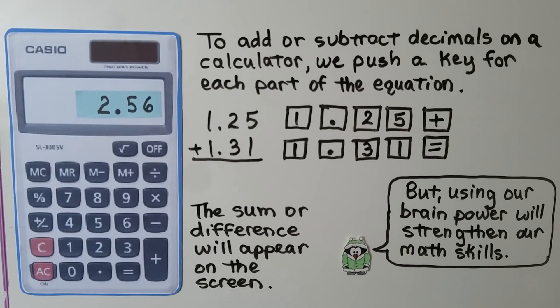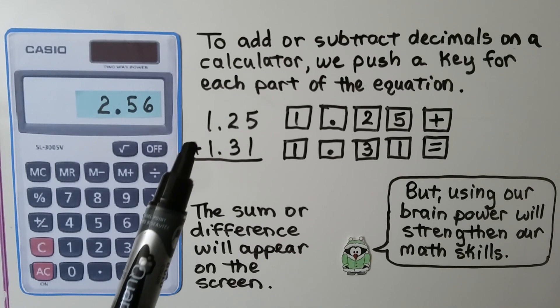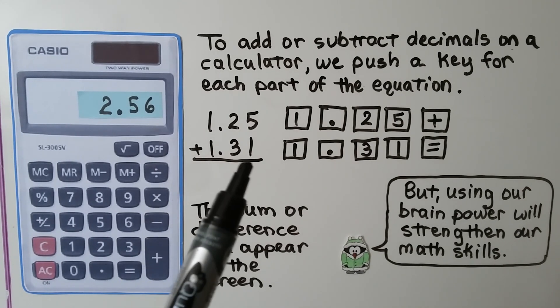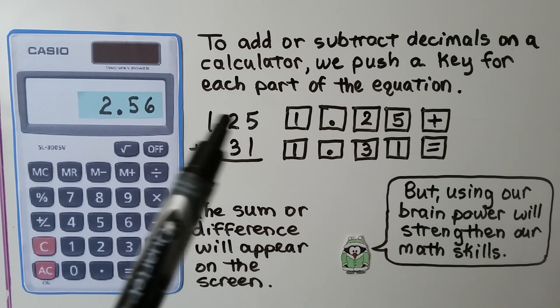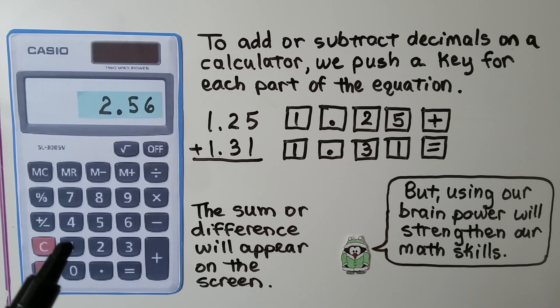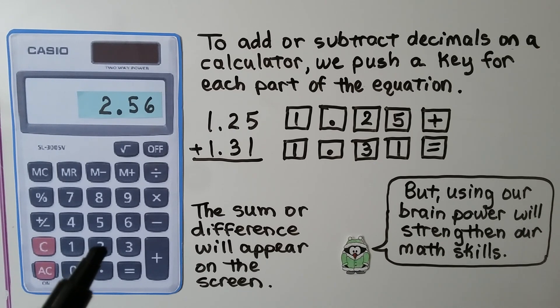To add or subtract decimals on a calculator, we push a key for each part of the equation. Here we have 1.25 plus 1.31. We start by entering the 1.25. We push the 1, we push a decimal point for our decimal, we push a 2 and then the 5 and then we hit plus.